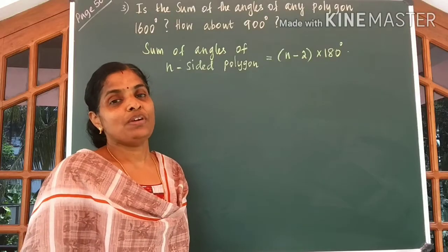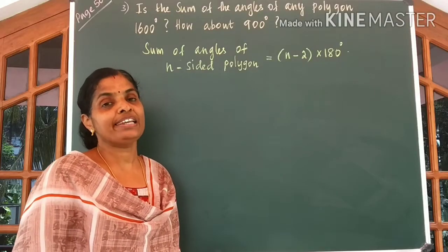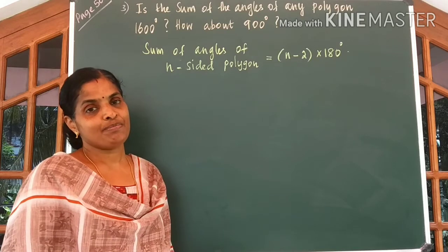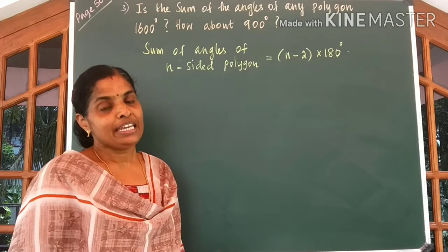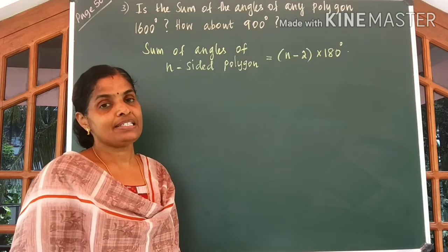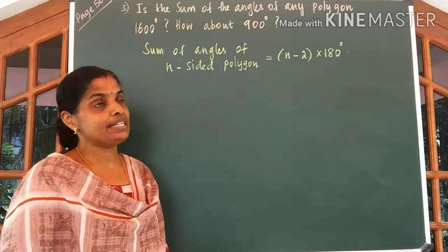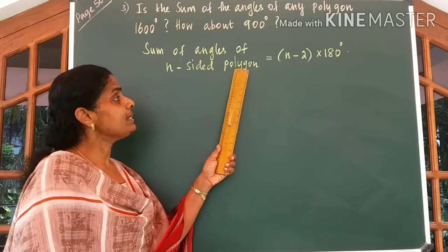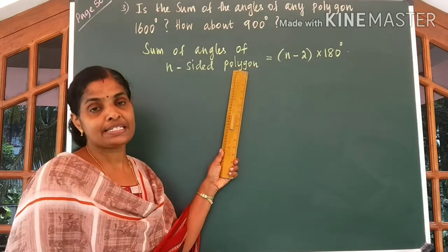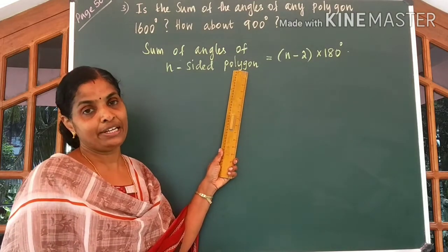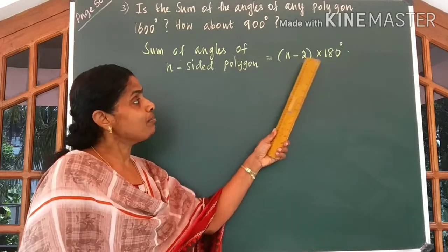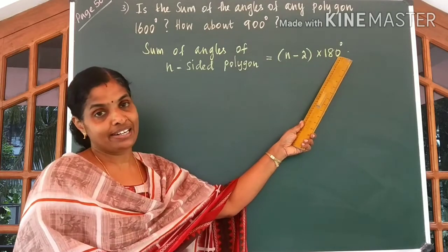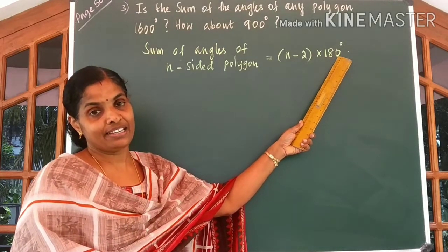Hi kids, welcome to the second class on polygons. In our first class, we discussed the sum of angles of an N-sided polygon to be equal to N minus 2 into 180 degrees.